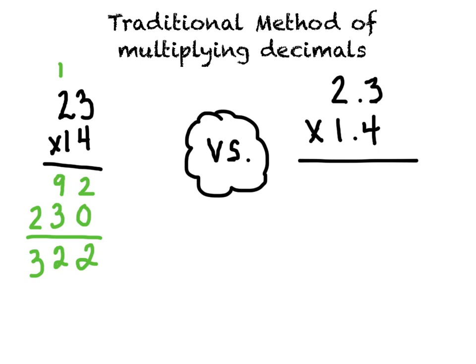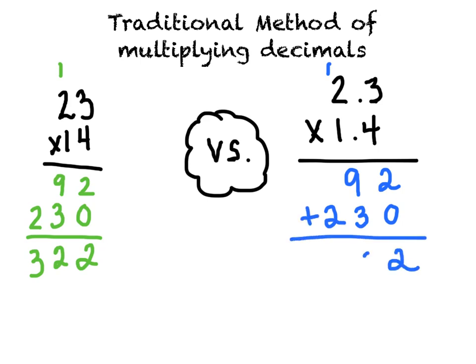Now we're going to do that same problem, but this time there are decimals in the problem. So we're going to multiply 2.3 times 1.4. When we start, we're originally just going to multiply as if those decimals weren't there. So we're still going to do 4 times 3 is 12, carry up the 1, 4 times 2 is 8, 1 more is 9, put down our 0 as our placeholder, 3 times 1 is 3, 2 times 1 is 2, and add just like we did in the original problem.